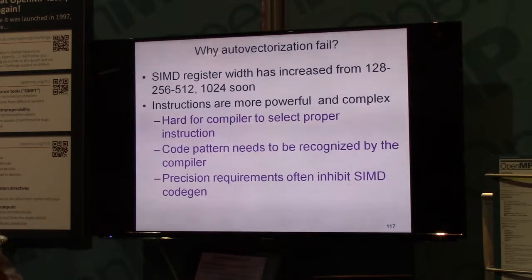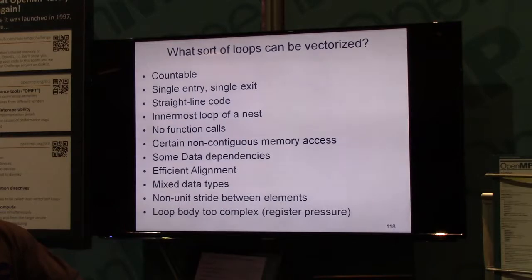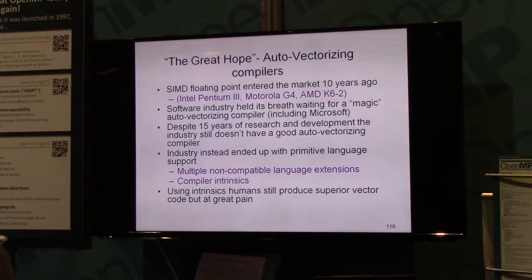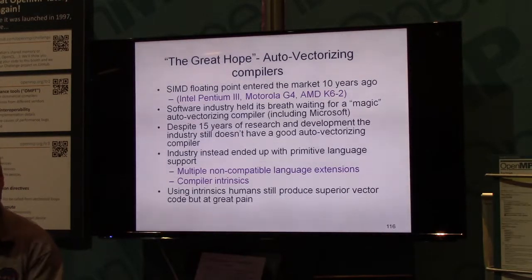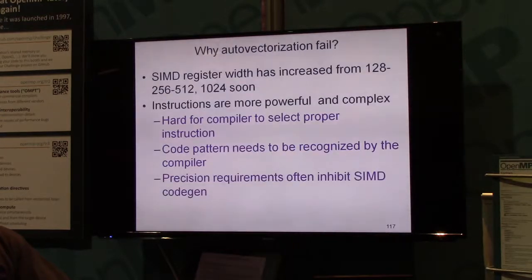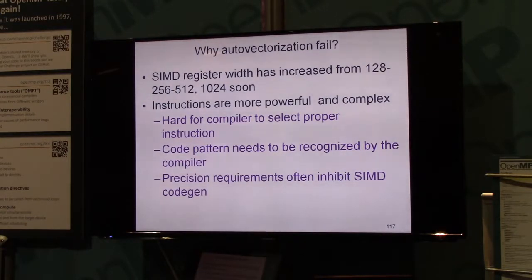One of the great hopes of compiler code generation is auto-vectorization. That great hope is nearly over, because we're finding that it's very difficult for most code bases to auto-vectorize. I remember when I used to work on the Cell — 70% of the time we spent was actually, and that was the previous generation of accelerator processor, to actually vectorize instructions.